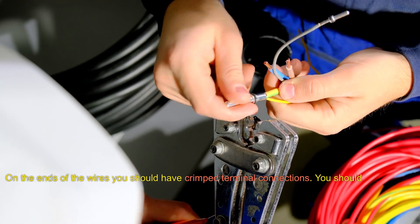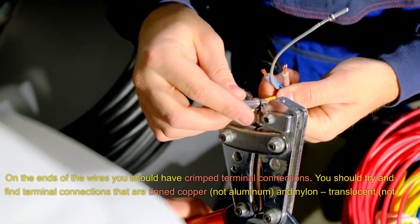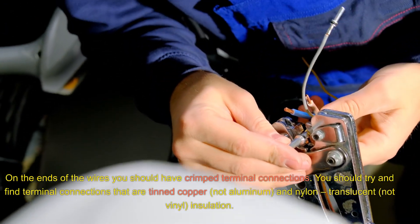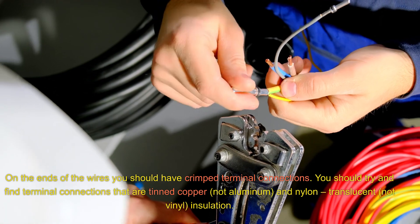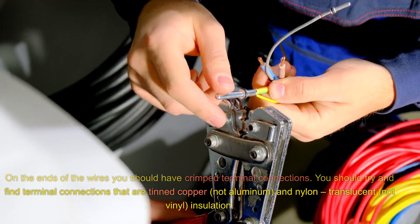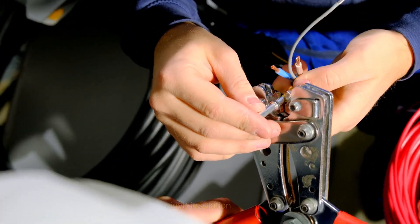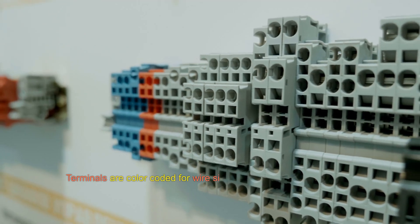On the ends of the wires, you should have crimped terminal connections. You should try and find terminal connections that are tinned copper (not aluminum), and nylon translucent (not vinyl) insulation. Terminals are color-coded for wire size.